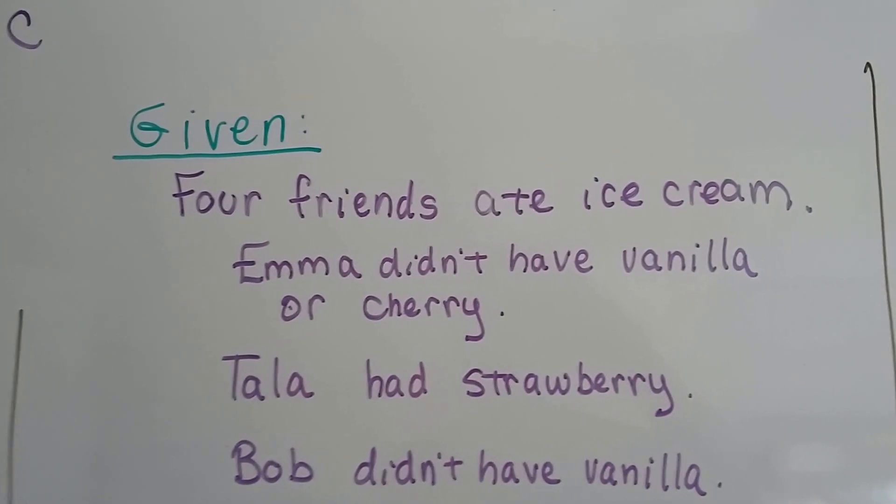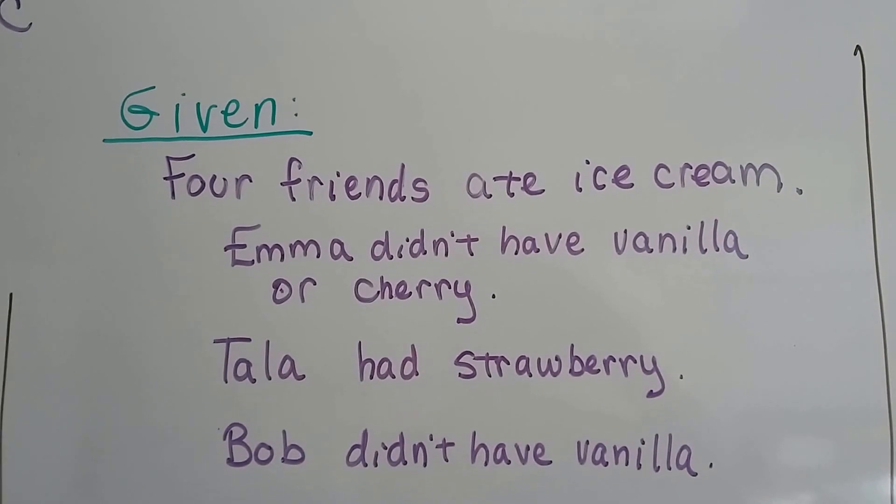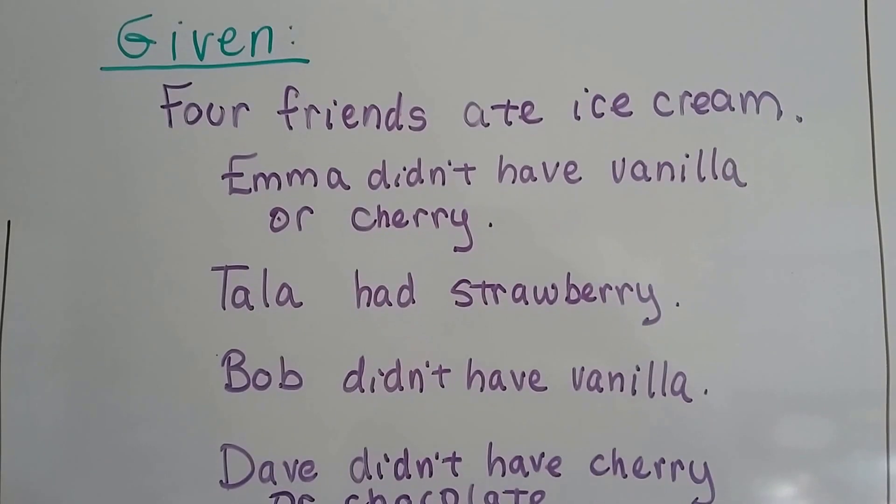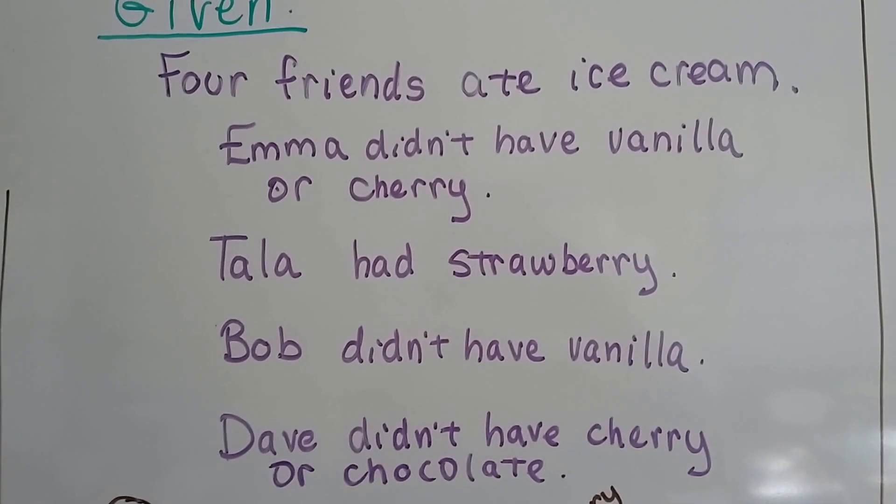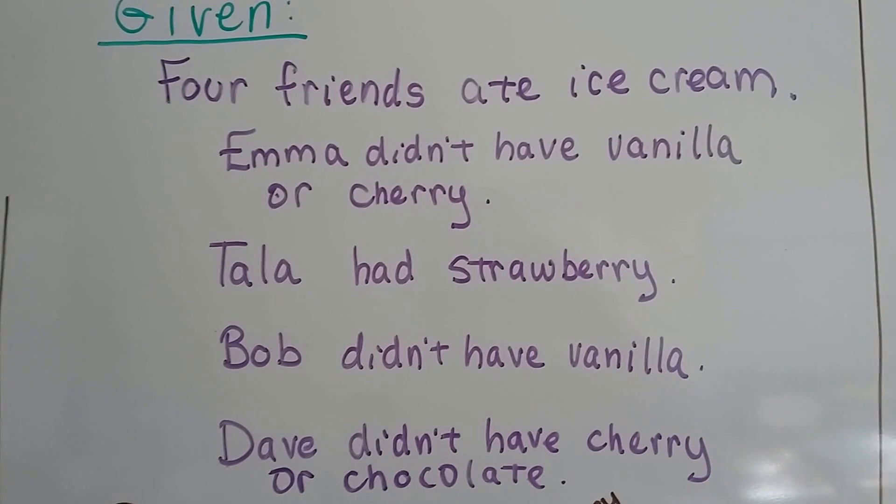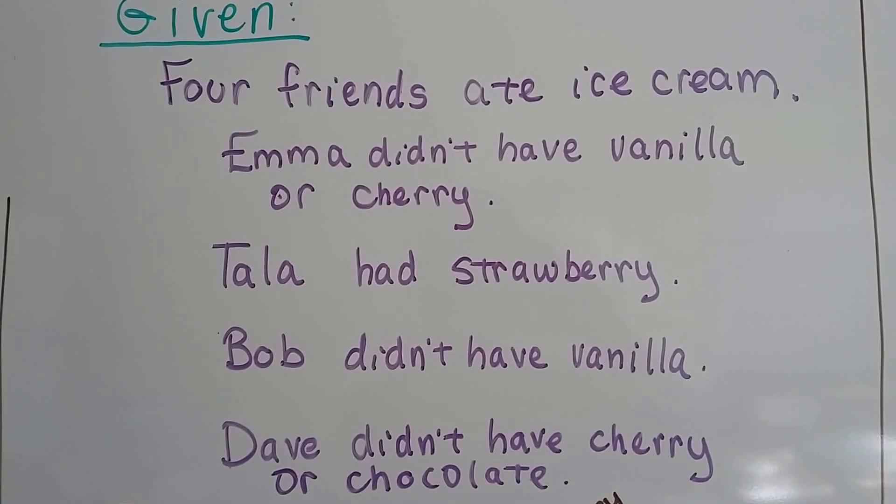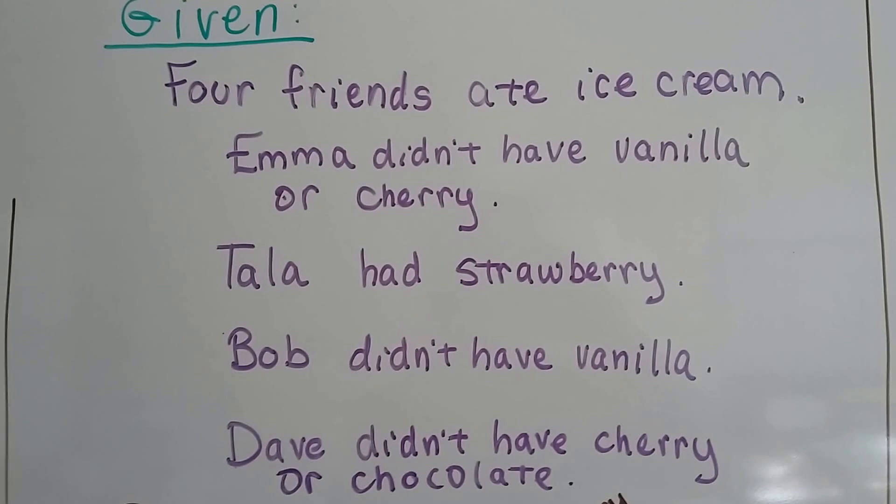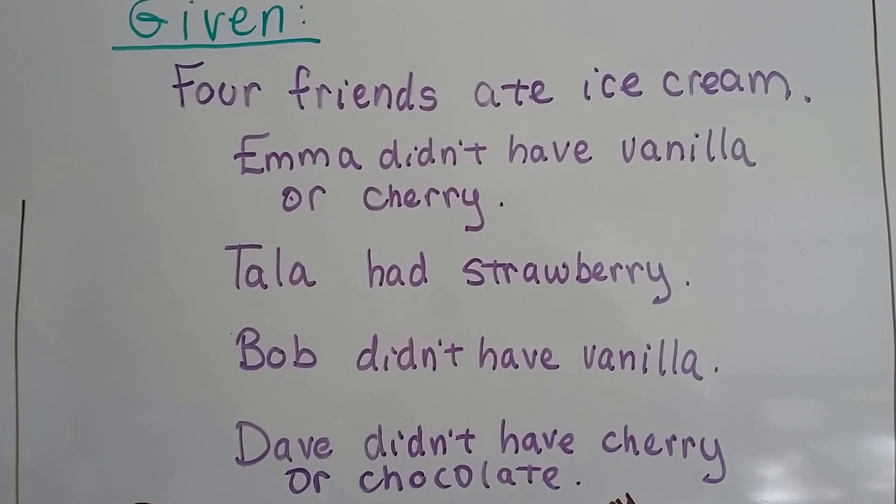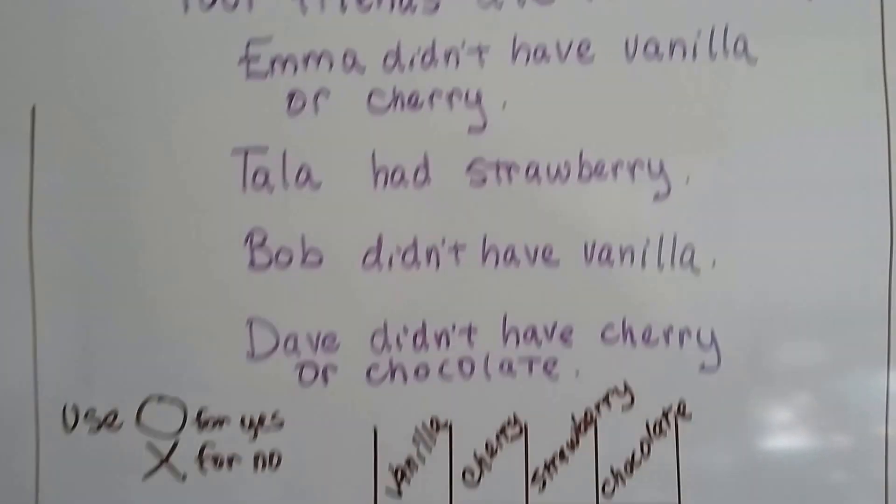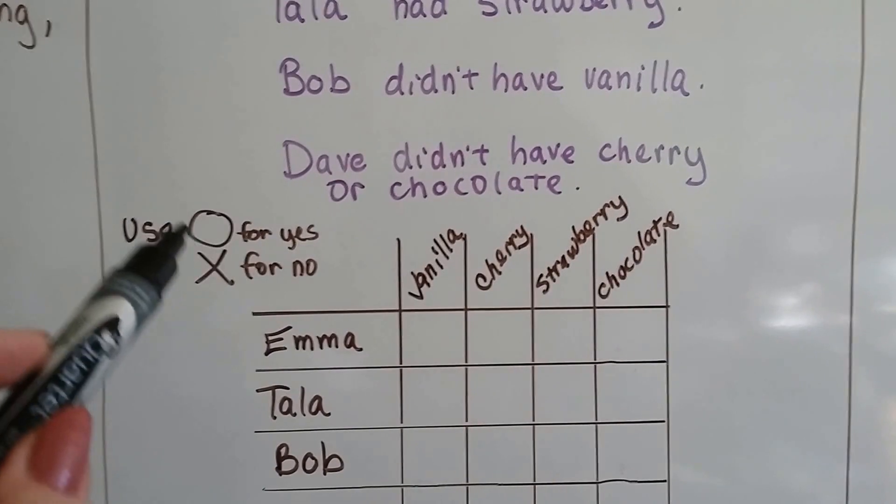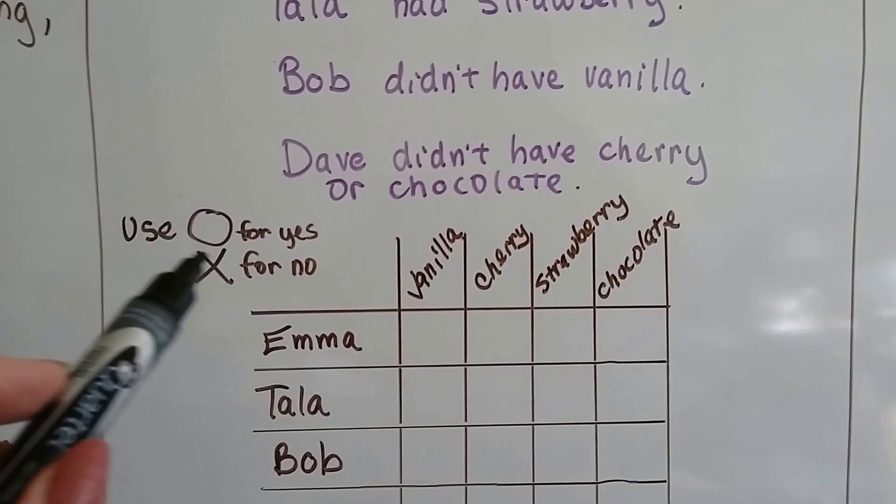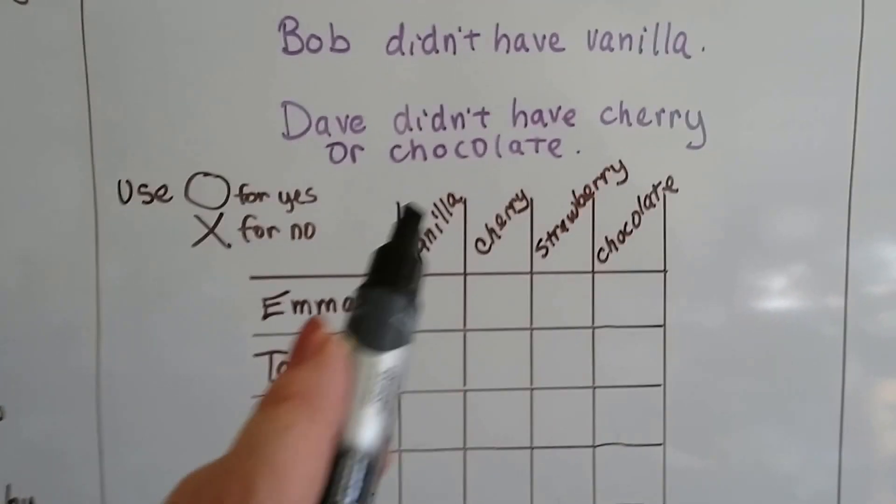Our given is four friends ate ice cream. Emma didn't have vanilla or cherry. Tala had strawberry. Bob didn't have vanilla. And Dave didn't have cherry or chocolate. Now we can look at these clues and see what each flavor they were eating. We don't know who ate what yet, but we know there's vanilla, cherry, strawberry, and chocolate just from the clues. Now we can use this table to help us solve this by putting a big O for a yes and putting an X for a no. So here's the flavors of ice cream and here's the friends.